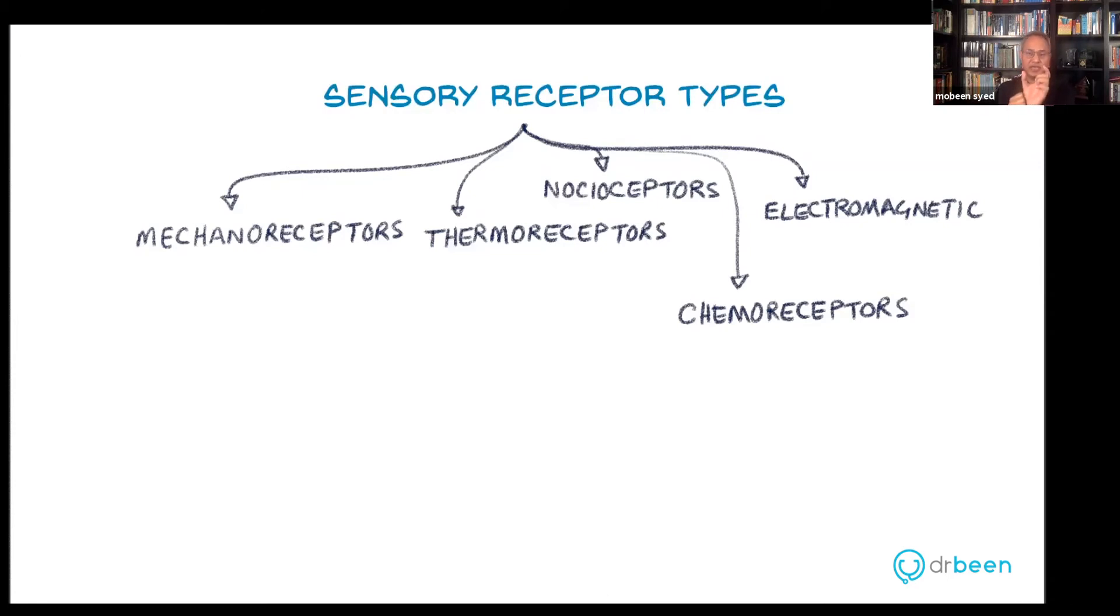Now, transduction means that we're going to take one form of energy or action or stimulus and convert it into electrical form. So remember this, the second thing, all receptors output is electrical.